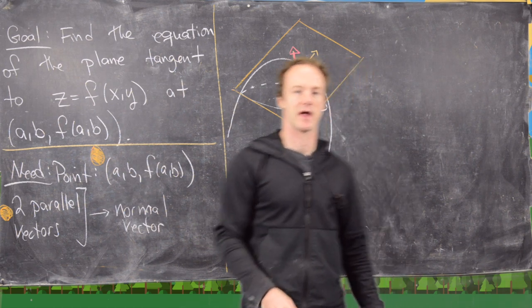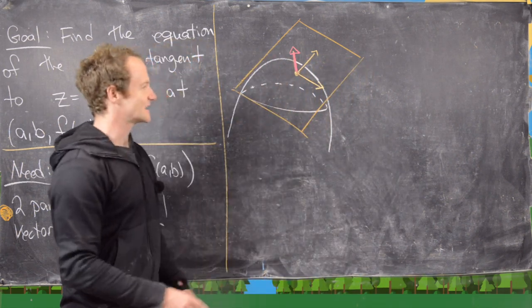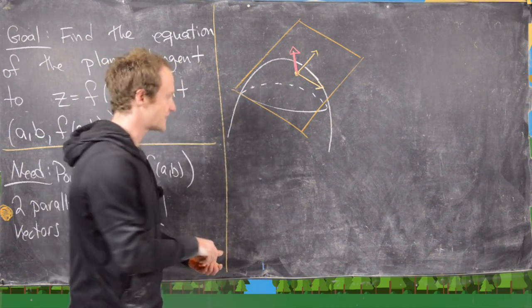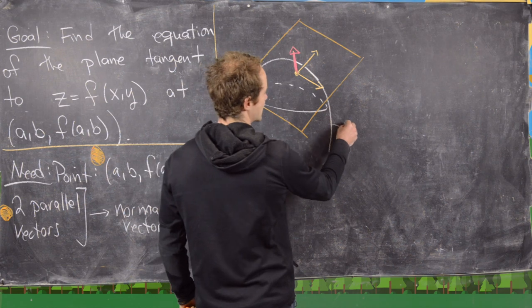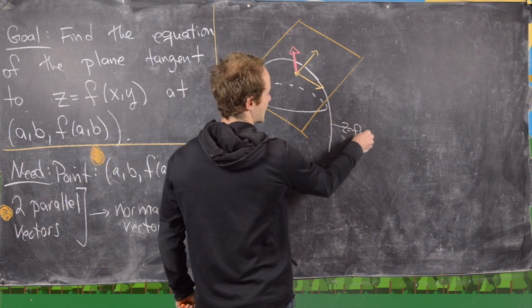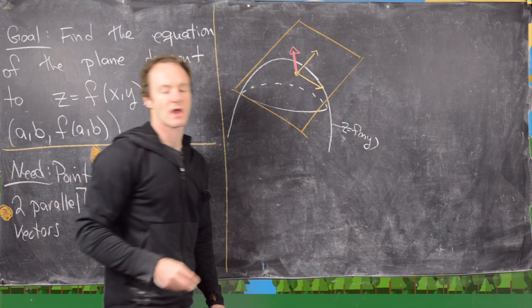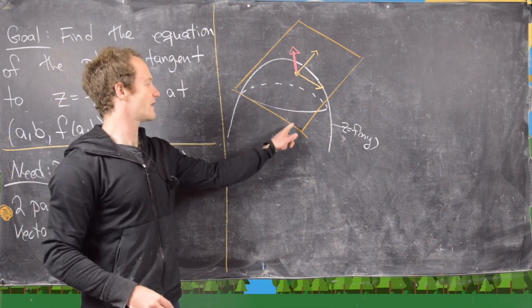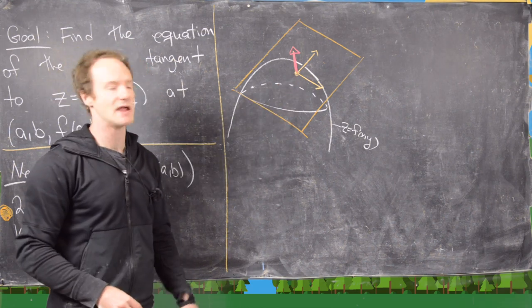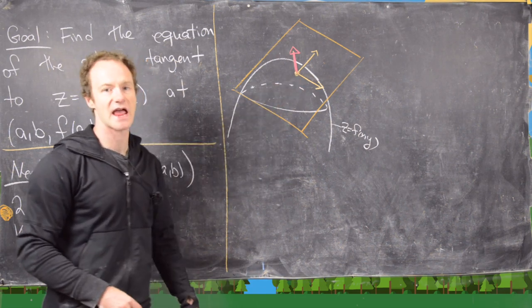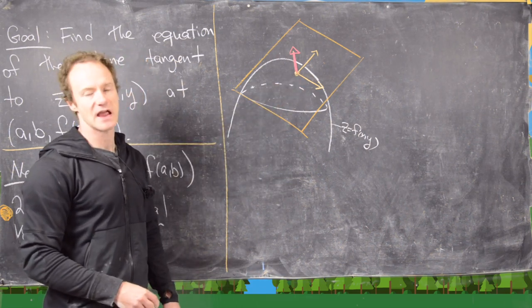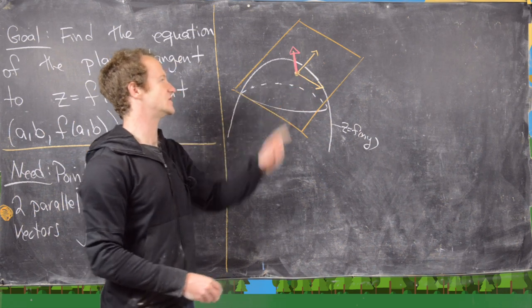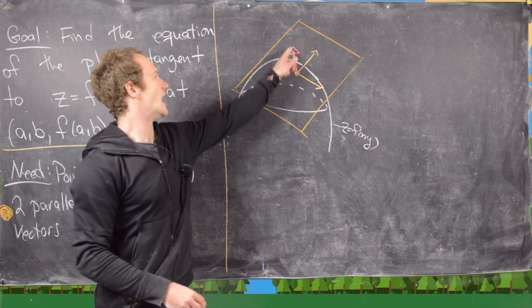It turns out that we will find two vectors parallel to the plane, take their cross product, and get a vector that is normal to the plane. I've sketched up a little picture here — in white is my surface z equals f of xy, and then here I've got my point a, b, f(a,b). I've got two vectors that are parallel to the tangent plane, drawn in orange.